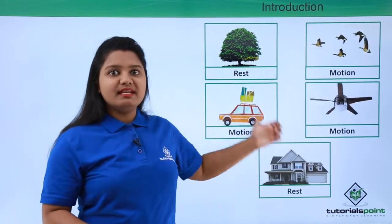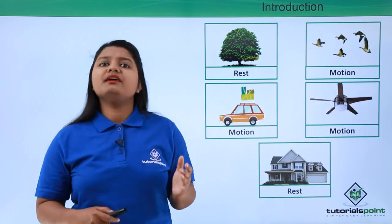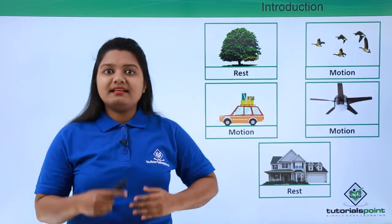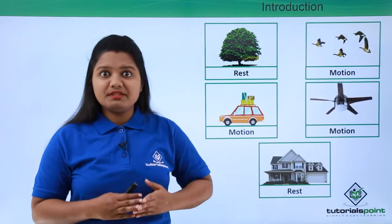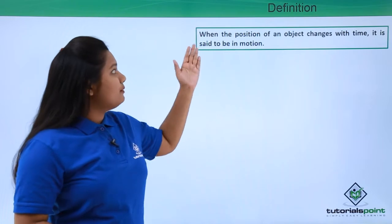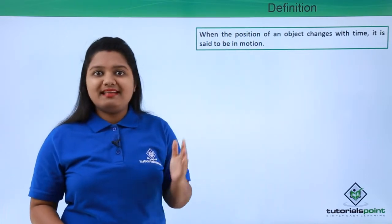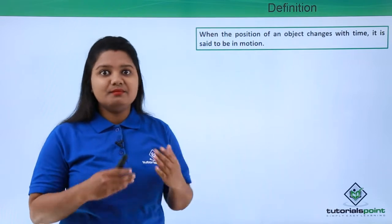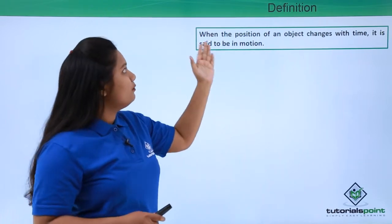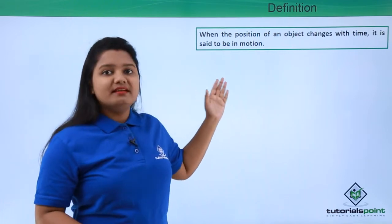So rest and motion are the two states in which a body could be found. Now how can we precisely say that a body is in rest or in motion? Actually, when the position of an object changes with time, we say that this body is in motion. So we define motion in this way.